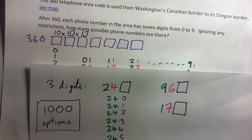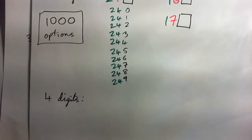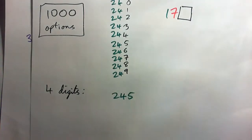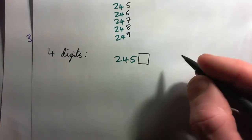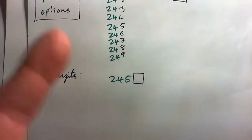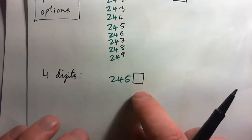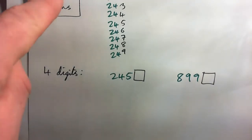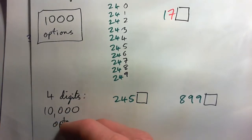For the fourth digit, take any three-digit option like 2-4-5 and add on another digit 0 through 9 — that's 10 new options for every three-digit number. There are 1,000 three-digit options, so adding another digit gives us 10,000 options for four digits. Similarly, five digits gives 100,000 options, and six digits gives 1,000,000 options.